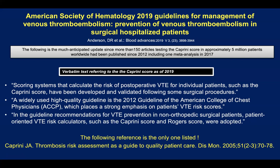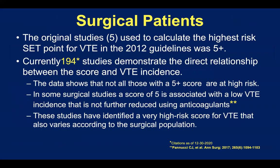There is an important issue: in the references to this guideline, there's only one reference for the Caprini score — the 2005 article — and the other 194 are missing. These data demonstrate the direct relationship between the score and VTE incidence. The data shows that not all those with a score of five and above are high risk. In some surgical studies, a score of five is associated with a low risk, and this incidence is not further reduced using anticoagulants — meaning you don't have to use anticoagulants in those patients, sparing the cost and the complications.